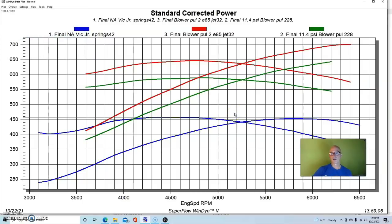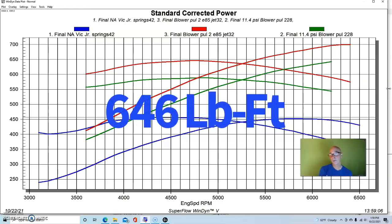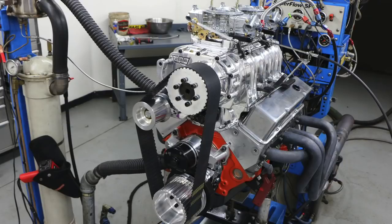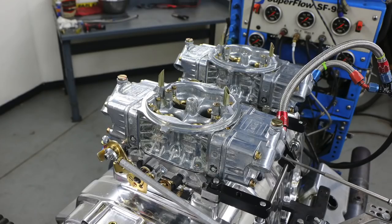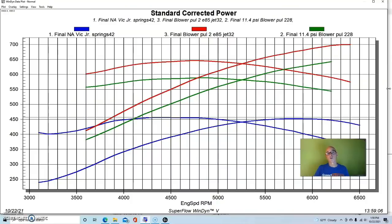Obviously the 671 was doing very well. On a roots blown application, the carburetors provide charge cooling as the fuel goes through the blower, which is good. It also helps lubricate the blower. A lot of blowers will need that and require that. You can't run those dry actually.